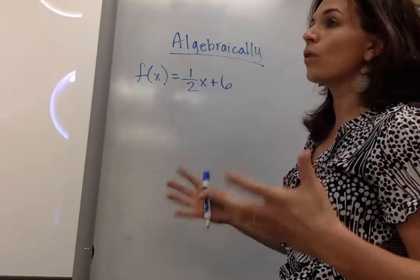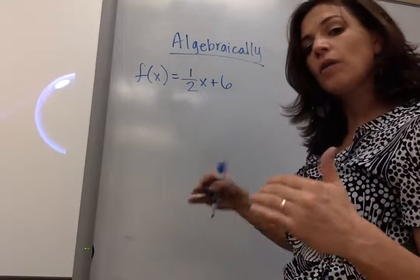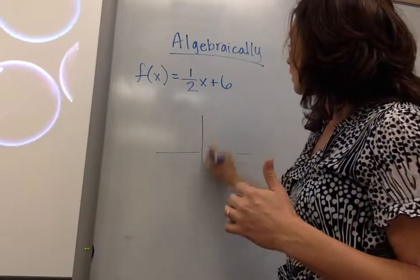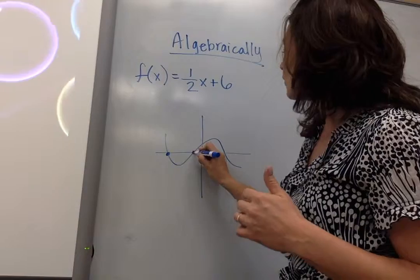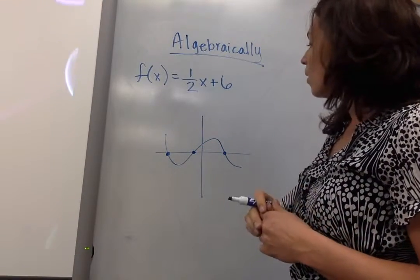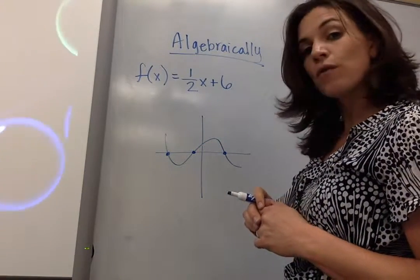We know that the root is where it crosses the x-intercept. Notice on the graph, if I have a graph, all these points right here - what is my value for y?